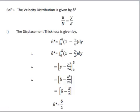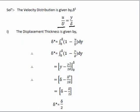In our first problem, the ratio u/U is given as y/δ. The displacement thickness δ* is the distance perpendicular to the surface by which the boundary should be moved to compensate for the reduction in mass flow rate. Mathematically it is given by δ* = ∫₀^δ (1 - u/U) dy. In our given problem, we replace u/U with y/δ in this integration.